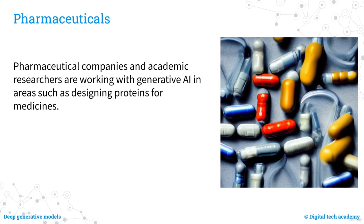AlphaFold is a machine learning system developed by DeepMind that uses a neural network to predict the 3D structure of proteins from their amino acid sequences. Trained on a dataset of known protein structures, it can accurately predict the 3D structure of a protein even if it has never seen that protein before. AlphaFold has been widely recognized as a major scientific breakthrough.